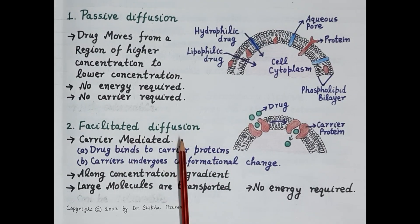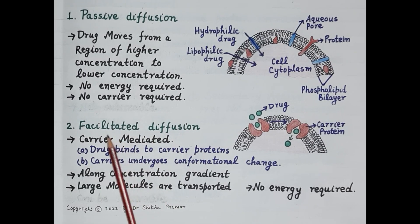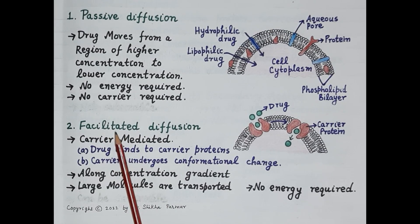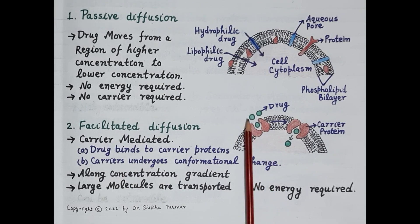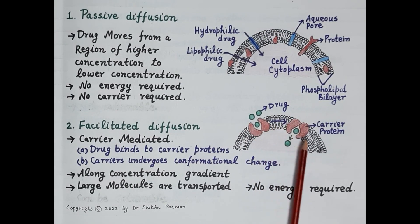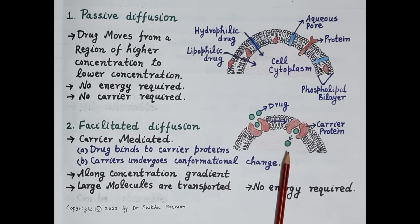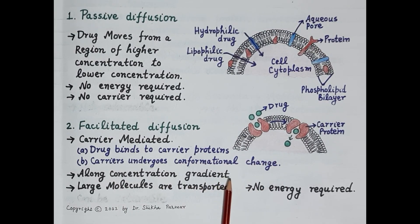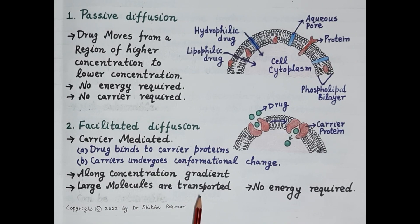The second transport process is facilitated diffusion. Carrier proteins facilitate the transport or absorption of the drug. The drug binds to carrier proteins, which then undergo a conformational change, causing transportation of the drug into the cell cytoplasm. Transportation is along the concentration gradient — from higher to lower concentration — so no energy is required. Importantly, large drug molecules are transported across the cell membrane by this process.